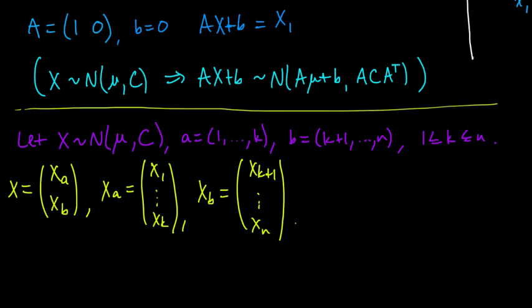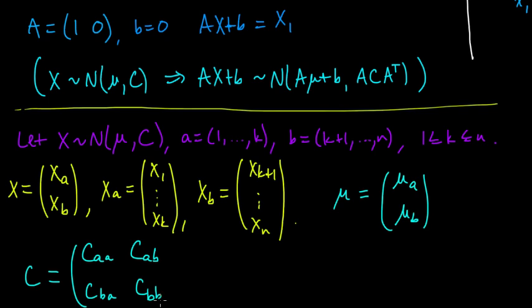So X, we just decompose it as this block vector type of thing. And similarly, we can decompose mu as mu A, mu B, that kind of block thing in the same way. And we can also decompose C. Let's decompose C as CAA, CAB, CBA, CBB. And here, this is a block matrix, as they say.